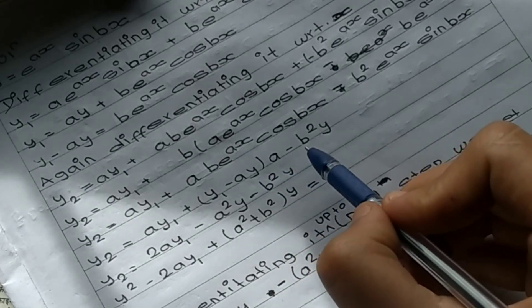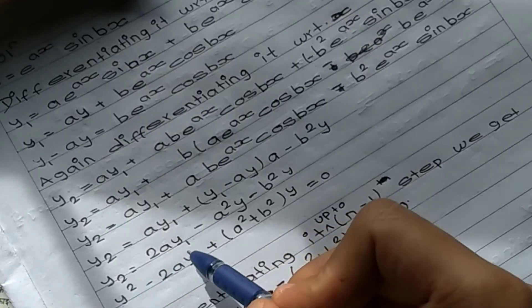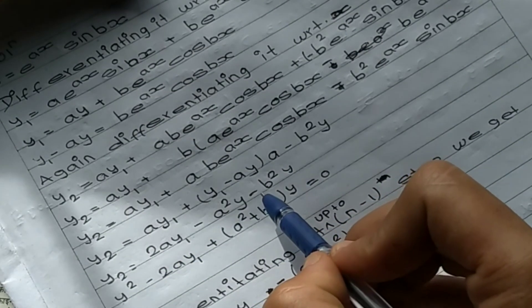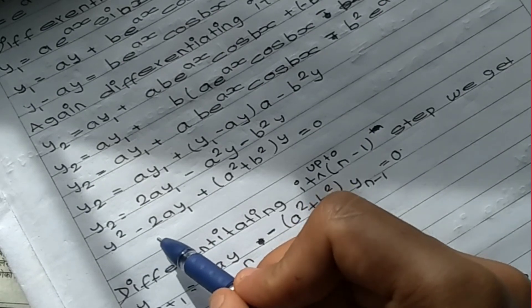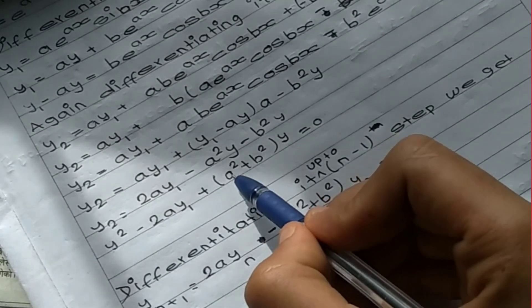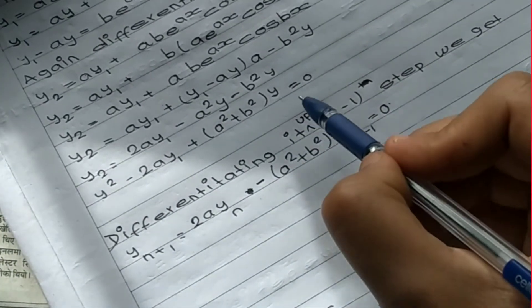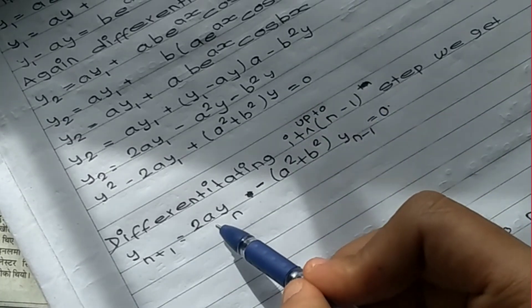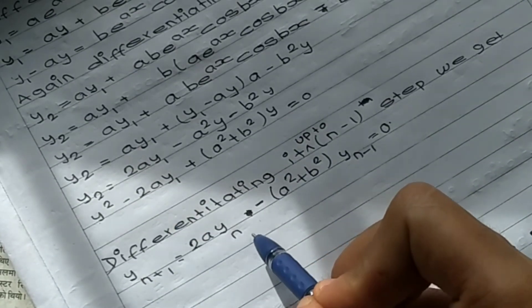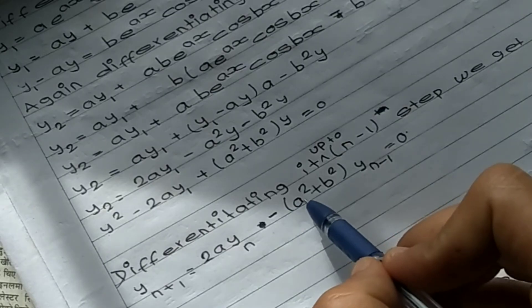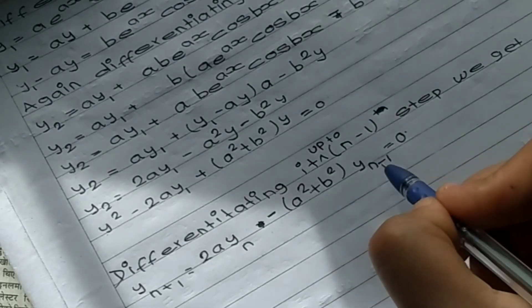This is equal to a·y1 plus (y1 minus a·y) minus b squared·y. So y2 is equal to 2a·y1 minus a squared·y minus b squared·y. Taking y terms common: y2 minus 2a·y1 plus (a squared plus b squared)·y is equal to 0. Taking the (n minus 1)th derivative: y_(n+1) minus 2a·y_n plus (a squared plus b squared)·y_(n minus 1) is equal to 0.